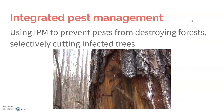The use of integrated pest management is another way to keep our forests healthy, particularly in national forests. Using IPM to prevent pests from destroying an entire forest, selectively cutting down impacted trees so they don't spread their pests to more trees — even if you have to cut down some trees, you stop the disease and keep more trees alive.